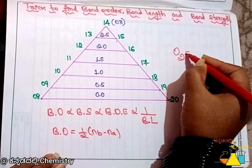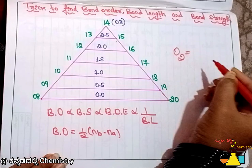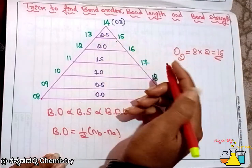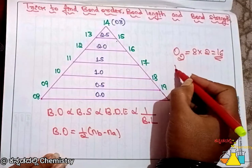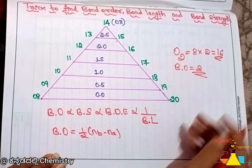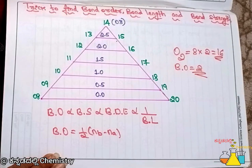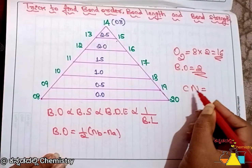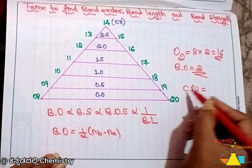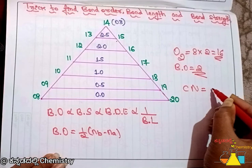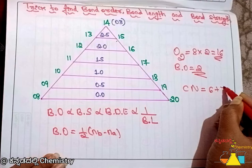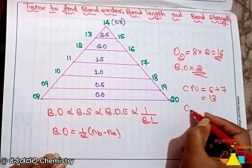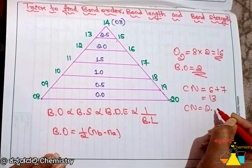For example, O2: oxygen has atomic number 8, so A2 is 16 electrons, giving bond order of 2. Another example: CN — carbon has atomic number 6, nitrogen is 7, so 13 electrons total, giving a bond order of 2.5.